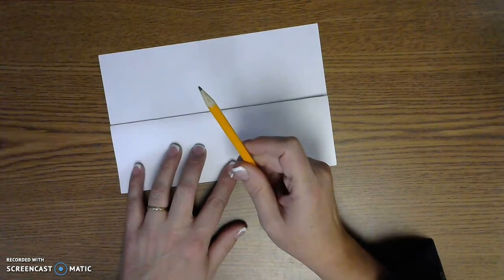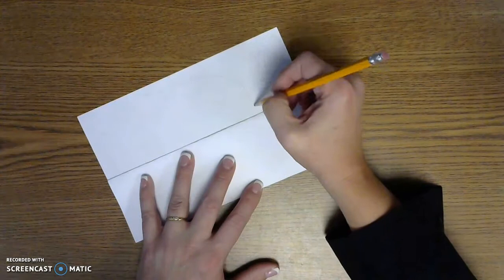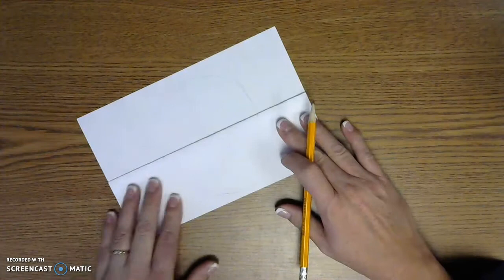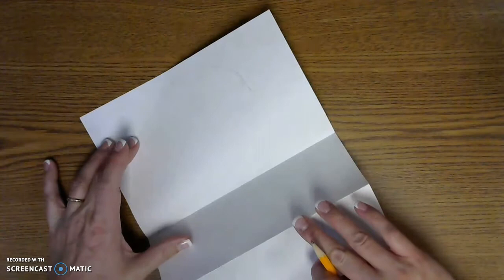Then you get out a pencil because we always start with pencil. It's easier to fix mistakes if we have a pencil. So we're going to make sure that we make a nice face shape. And I do it very light to start with. And that way, if I make a mistake, then I can erase it easily.